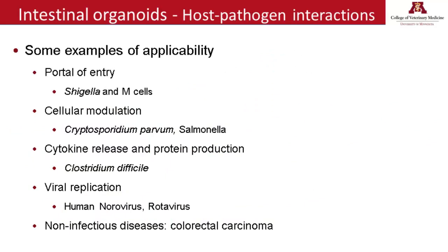Taking advantage of this similarity, many researchers have been using enteroids to understand the relationship of pathogens and hosts, especially focusing on human disease. For example, it has been discovered that Shigella as well as Salmonella can use M cells as a portal of entry into the intestine. Enteroids have also been used to understand the cellular modulation caused by Cryptosporidium parvum and Salmonella, and to study cytokine release during Clostridium difficile infection. Enteroids have been used to understand infections by norovirus and rotavirus, and can also be used to study non-infectious diseases such as colorectal carcinoma.